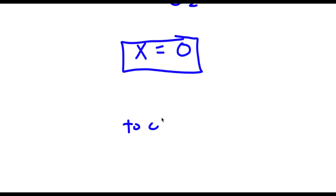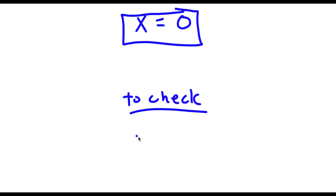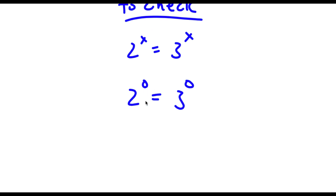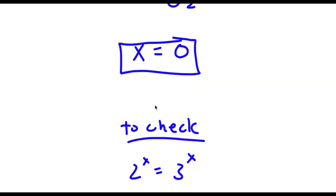Now to check: I have 2 to the power of x equals 3 to the power of x. With x equal to 0, I have 2 to the power of 0 equals 3 to the power of 0. Anything to the power of 0 is 1, so I have 1 equals 1. Because this is correct, our solution is correct as well.